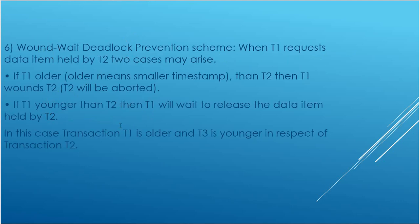In the wound-wait deadlock prevention scheme, when T1 requests a data item held by T2, two cases may arise. First, if T1 is older — meaning smaller timestamp — than T2, then T1 wounds T2, that is T2 will be aborted. If T1 is younger than T2, then T1 will wait for T2 to release the data item.